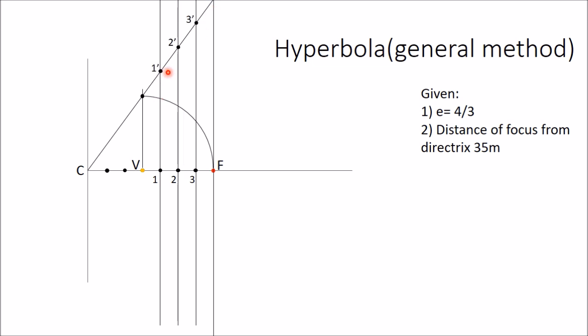Now the next step is: take F as center and 1-1' as radius. With F as center and 1-1' as radius, draw two arcs which cut the line from 1 at two places. Distance is 1-1' and center is F. In this way, you are getting two points of the hyperbola.